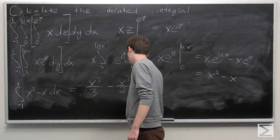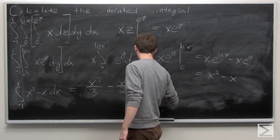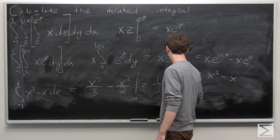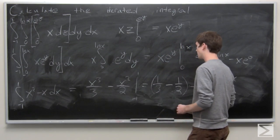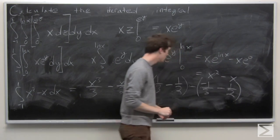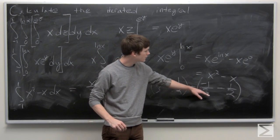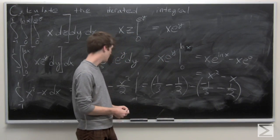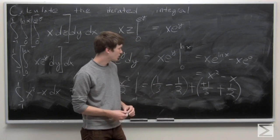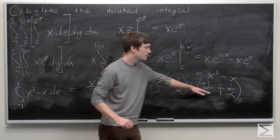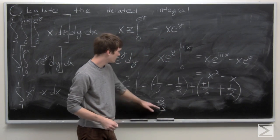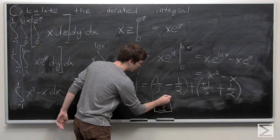We evaluate from negative 1 to 1. Plugging in our values, we get 1/3 minus 1/2, minus the quantity negative 1/3 minus 1/2. Distributing the negative sign gives plus 1/3 plus 1/2. So 1/3 plus 1/3 is 2/3, and negative 1/2 plus 1/2 is 0. Our iterated integral equals 2/3.